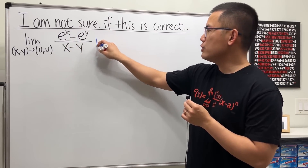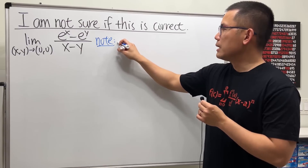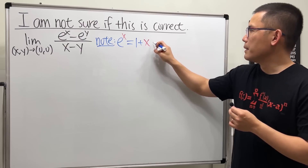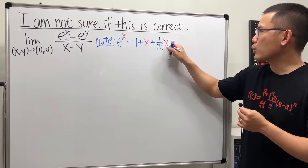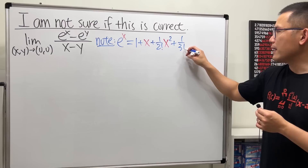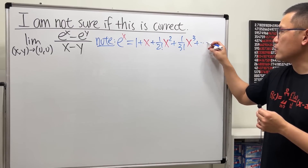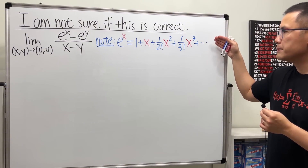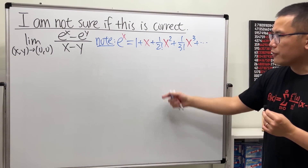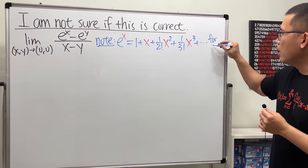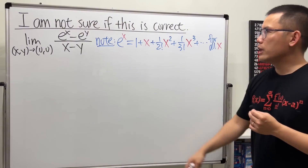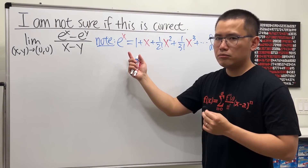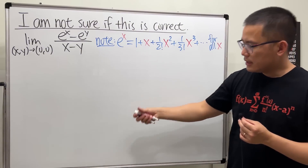Let me make a note: the power series expansion for e to the x centered at zero is equal to 1 plus x plus one over two factorial times x squared plus one over three factorial times x to the third power, and so on. The beauty of this is that it's valid for all x — you can plug in square root of 2 or negative pi over 17 and it will still be true.